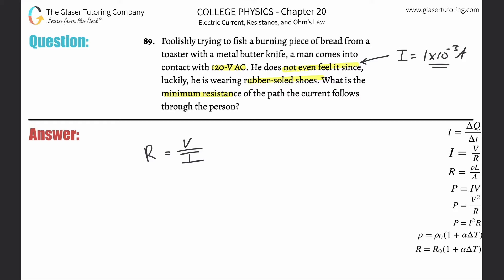So when we now apply these values into the formula, it's 120 volts divided by that value of 1 times 10 to the minus 3. So the resistance here will become, when you do the math, it's going to be 120 times 10 to the third, which is just simply 1.2 times 10 to the fifth ohms.